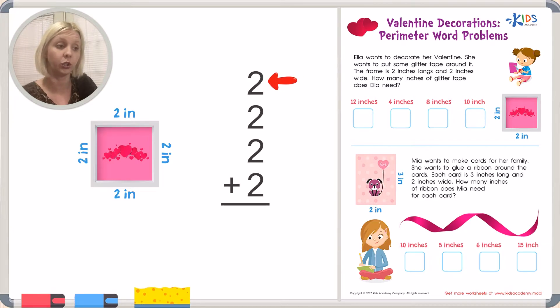We've got 2. Let's count by 2. It's 2, 4, 6, 8. Or that's also 2 times 4 because there's 4 sides. So the total number is going to be 8 inches. That's how much glitter tape that we're going to need to go on the outside of the perimeter of the valentine.